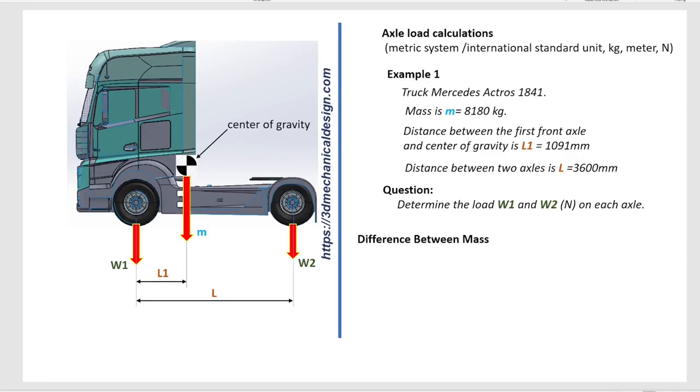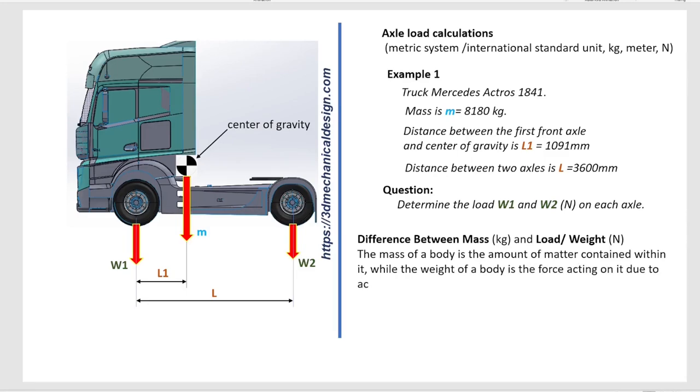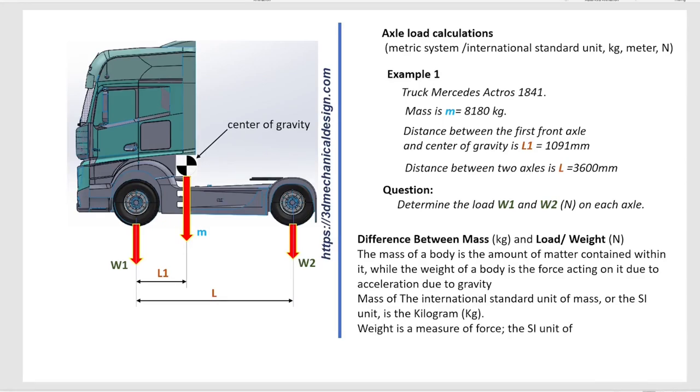Difference between mass and load weight. The mass of a body is the amount of matter contained within it, while the weight of a body is the force acting on it due to acceleration due to gravity. Mass of the International Standard Unit of Mass, or the SI unit, is the kilogram. Weight is a measure of force, the SI unit of weight is Newton.